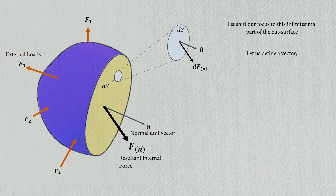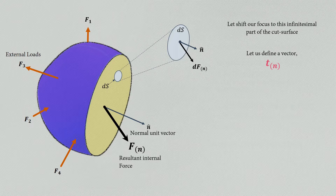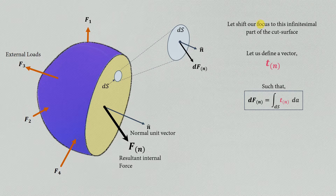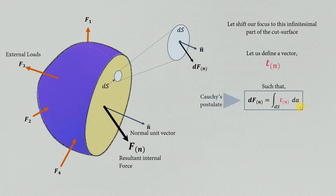To calculate this resultant internal force, let us define a vector tn — again, n signifies that the plane of observation has normal unit vector n. We define tn such that when you integrate this vector over the area, you get the infinitesimally small resultant internal force on the surface. This is a mathematical definition of tn. We call this mathematical statement Cauchy's postulate, and this vector tn is called Cauchy's traction vector.